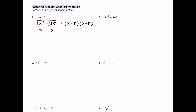For number two we have 4x squared minus 49. It's definitely got two terms, so it could be a difference of squares since there's a subtraction sign. The square root of 4 is 2, the square root of x squared is x, and the square root of 49 is 7. Since both are perfect squares and there's a subtraction sign between them, this factors into (2x minus 7) multiplied by (2x plus 7). It doesn't matter which one you write first.